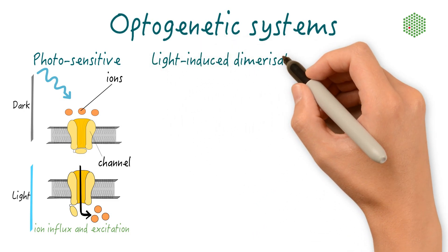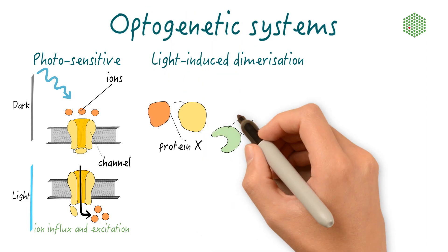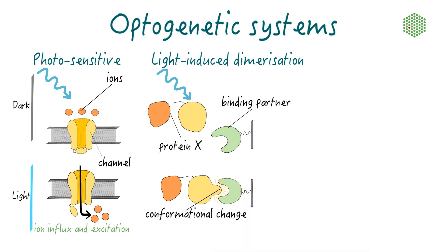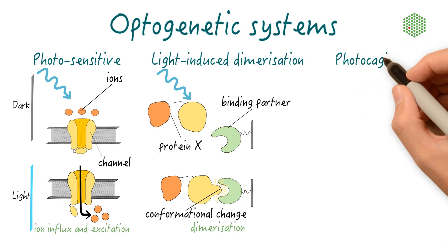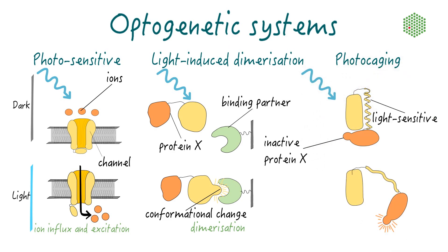The second system involves proteins that undergo light-induced dimerization. Light exposure induces a conformational change in the photosensitive protein domain. Then, a specific interactor exclusively binds the photosensitive protein in its excited state. Using this light-dependent heterodimerization, a fused target protein can be recruited to the plasma membrane. The third class of optogenetic systems is based on photocaging. In the dark, the photosensitive protein of interest has an inactive conformation, usually because of allosteric auto-inhibition. Upon light exposure, intramolecular unfolding caused by minor conformational changes activates the target protein or exposes dedicated signaling motifs. Applications which make use of light-induced dimerization and photocaging systems in cell and developmental biology are referred to as non-neuronal optogenetics.